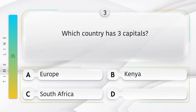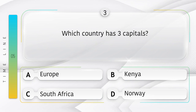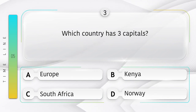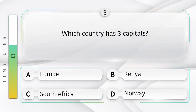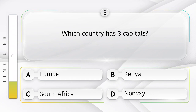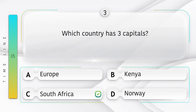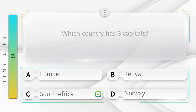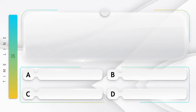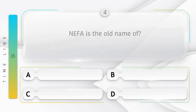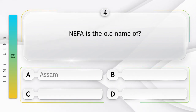Which country has three capitals? Option A: Euro, B: Kenya, C: South Africa, D: Norway. Answer is option C, South Africa.